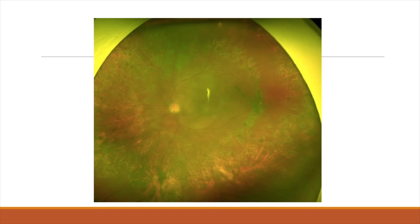Similarly, if you have a patient with 360-degree lattice which you would never have treated, but someone does a half-hearted treatment and one edge is untreated, you say 'let me complete that.' These are relatively relative indications — if the patient is new to you and you see this, you wonder maybe someone put a barrage there and forgot, or couldn't see because of cortical spokes. There could be different reasons, but this is an incomplete PRP, so why not complete it.